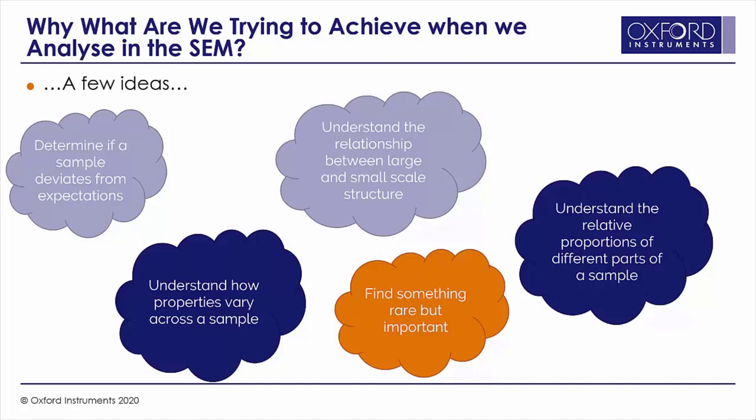We have a variety of different jobs. Sometimes it's a kind of quality control — perhaps determining if a sample deviates from expectations, be that in a positive or negative way. Sometimes it's about understanding how properties of many different kinds vary across a sample. Sometimes it's about understanding the relationship between what we see on a large macro scale to what we see down on a micro or nanoscale. Sometimes it's about finding something rare but important — like a very valuable mineral, or checking for particularly bad particles. Or it could be about understanding a whole population, including the relative proportions of different parts of a sample.